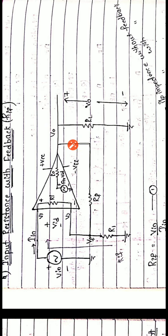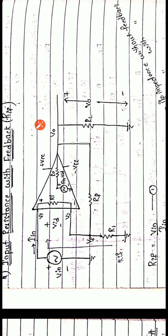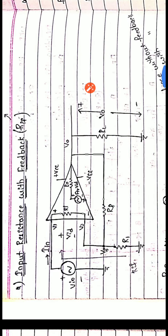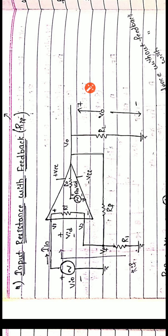Looking at the circuit diagram, this is a basic operational amplifier. Inside the circuit, RI is the input resistance or impedance, R0 is the output impedance, and there is a voltage source equal to AV times VID. VIN is the source signal, VID is the differential signal equal to V1 minus V2, V0 is the output, RF is a feedback resistor between output and input, R1 is the resistance at the input side connected to ground included in the feedback network, and RL is the output resistance.